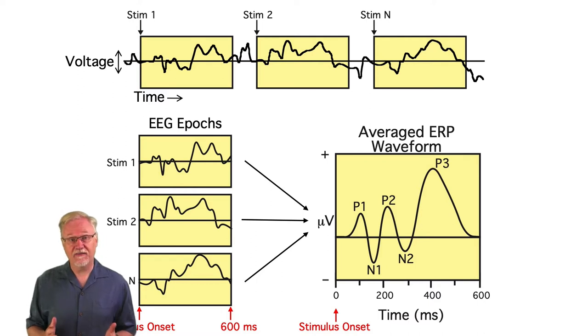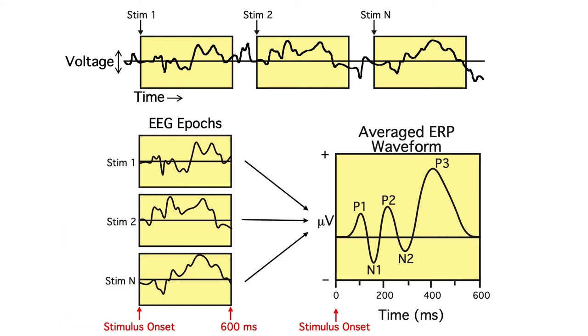The more trials we have, the more random activity we'll average out, leaving us with a beautiful ERP waveform. But this leads to an important question.